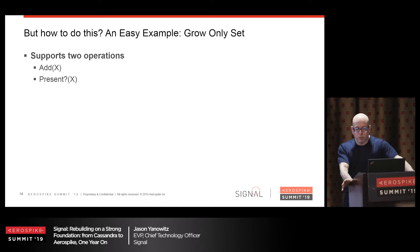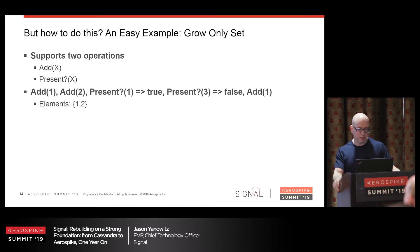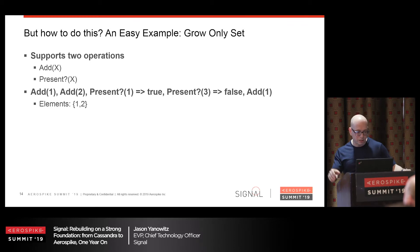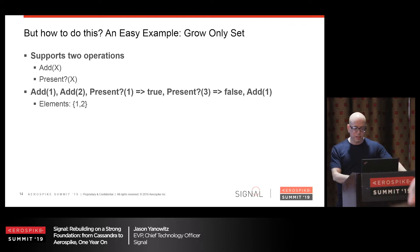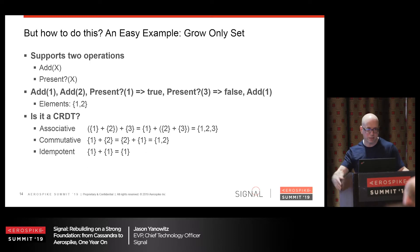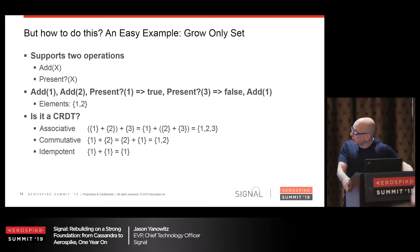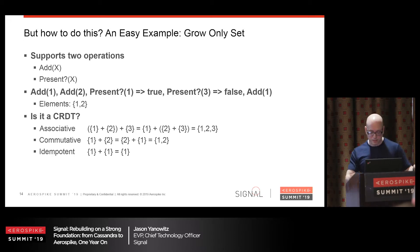Let's start with a grow-only set. This supports two operations: you can add to it, and you can ask if something's in it. You add a one and then a two. Is the one there? Of course. Is three there? No. If you add a one again, nothing changes. It's obvious that this grow-only set obeys the three rules — associative, commutative, idempotent. There are lots of use cases for grow-only sets. However, it has a small limitation: you can never delete from it. And it turns out that it's useful to delete things.